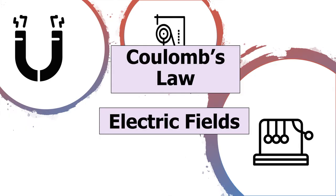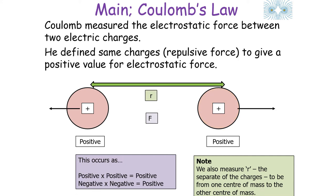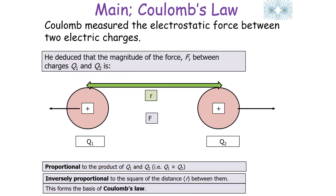We can use these ideas to look at Coulomb's law. Coulomb measured the electrostatic force between two electrical charges, defining opposite charges as having an attractive force with a negative value, since positive times negative equals negative. The separation r is measured from the center of mass of one particle to the center of mass of another. Objects with the same charge have a repulsive force with a positive value. Coulomb deduced that the magnitude of the force between charges Q1 and Q2 is proportional to the product of the charges and inversely proportional to the square of the distance between them.